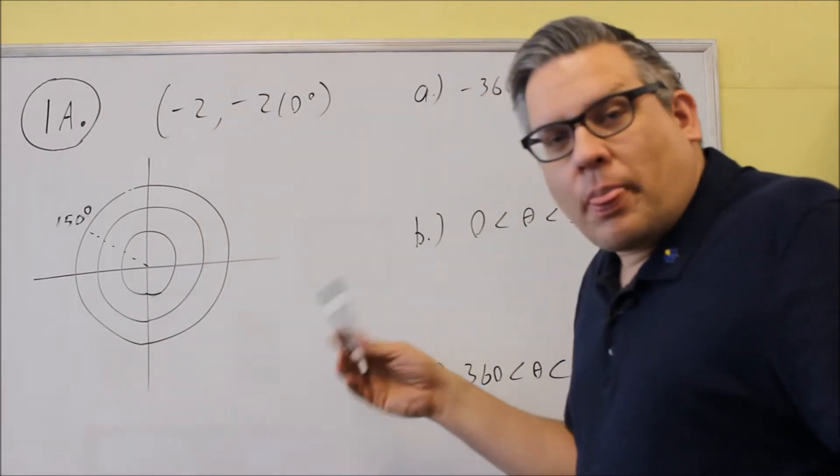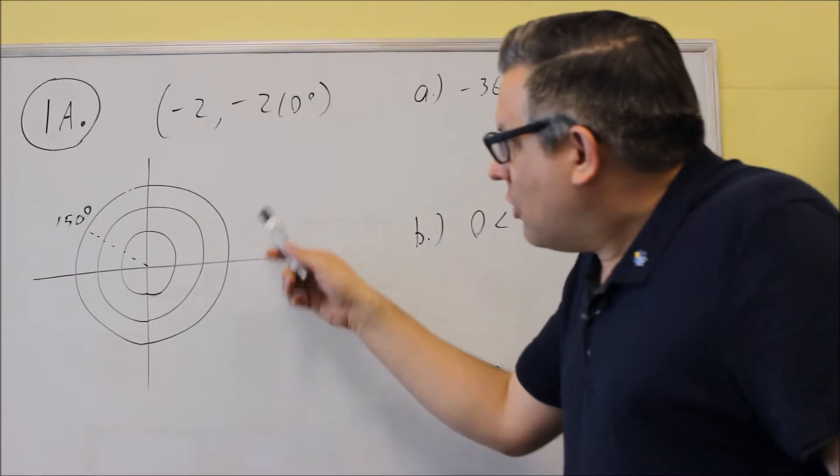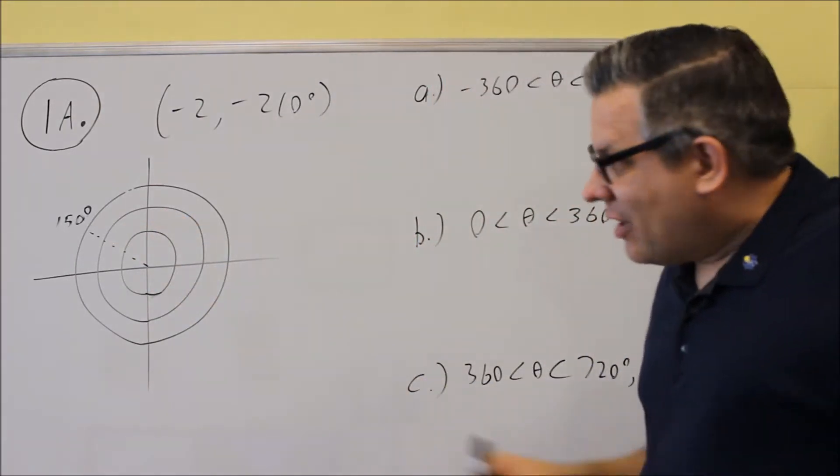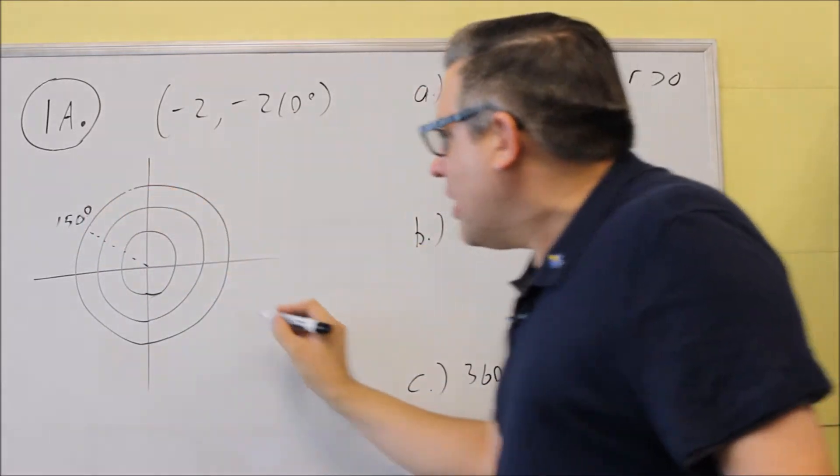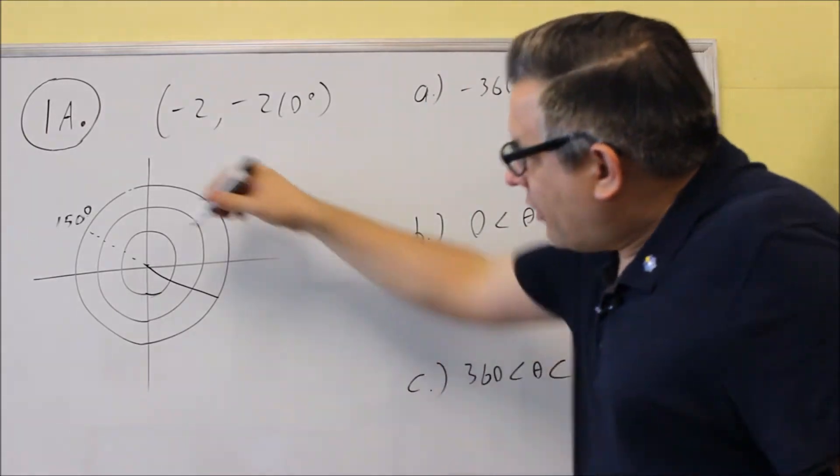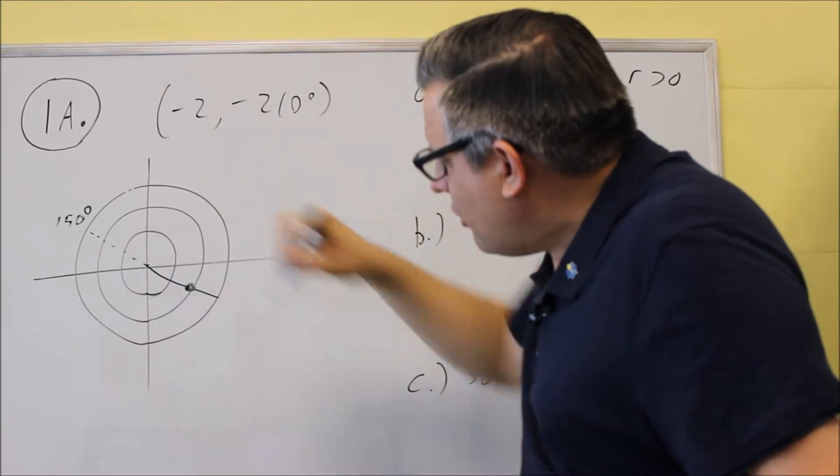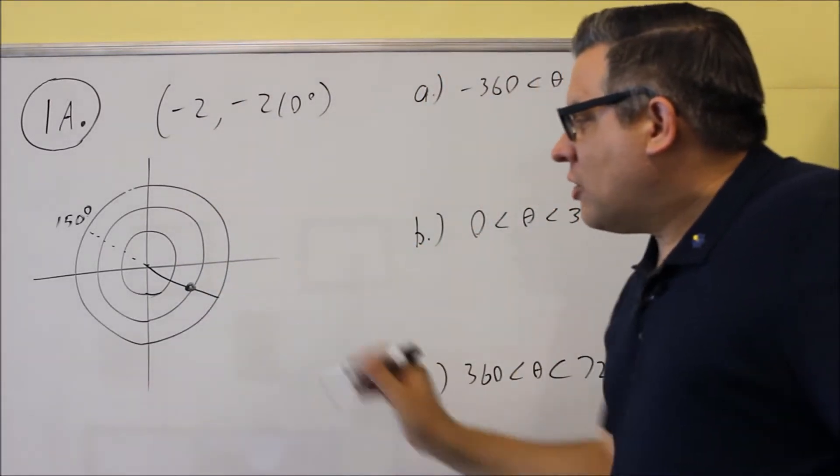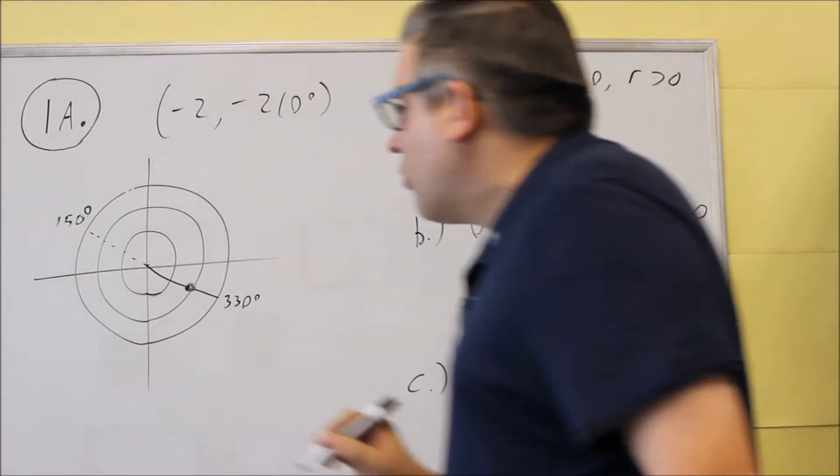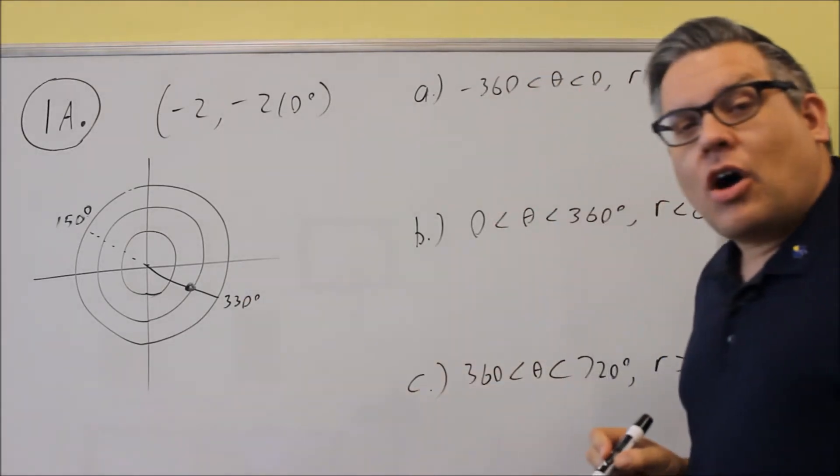Now I'm using a dotted line here because the R value is negative. So whenever you have a negative R value, whatever angle you have here, you're always going to make a dotted line. And then you want to reverse it in the opposite direction, so 180 degrees in the other direction. And then on that line, you're basically going to count out 2 and it's going to end up right there. So this line that's indicated on there is the 330 degree line is where it's going to end up at. So your point should be in the fourth quadrant.